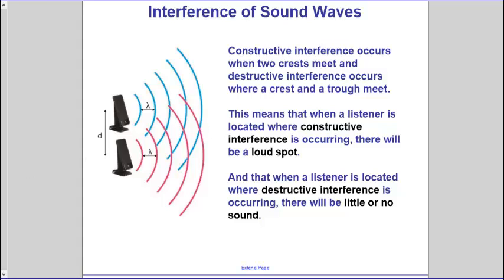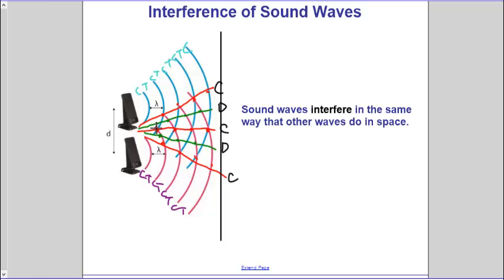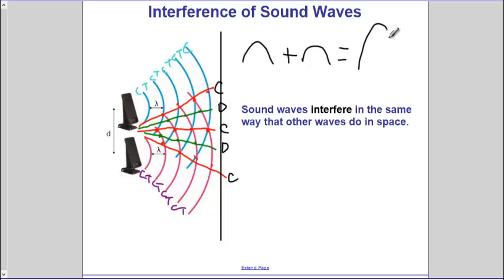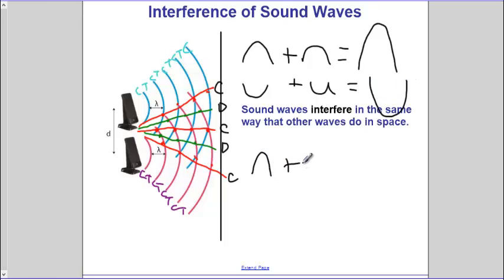When a crest encounters a crest, we'll experience constructive interference. Or when a trough encounters a trough, we'll also experience constructive interference. But when a crest encounters a trough, you'll get destructive interference. When a crest and a crest encounter each other, you get a large crest. When a trough and a trough encounter each other, you get a large trough. But when a crest and a trough encounter each other, you get nothing.